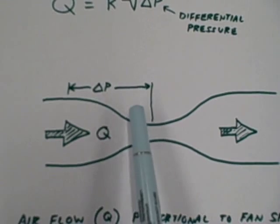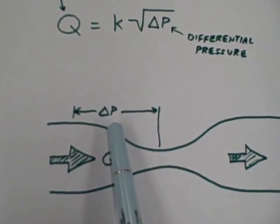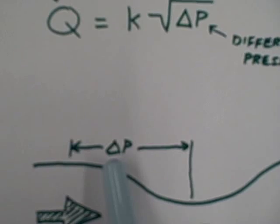This produces a difference of pressure between the wide and narrow sections, which we refer to as differential pressure, or delta P.